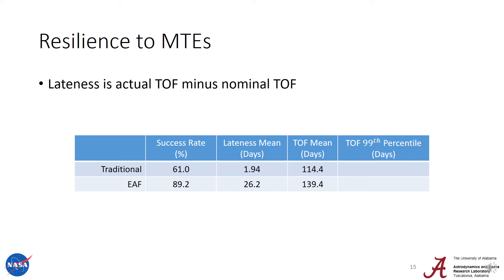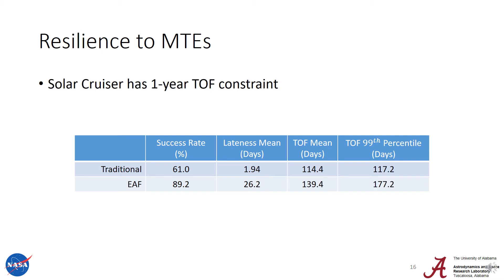Looking at lateness and time of flight, there is an increase in mean lateness of about 25–30 days, as well as a corresponding increase in mean time of flight. Looking at the 99th percentile of the time of flight, the expected angle fraction has a 99th percentile of 177 days, which is less than the one-year time of flight constraint for Solar Cruiser — so we're well within bounds there too.